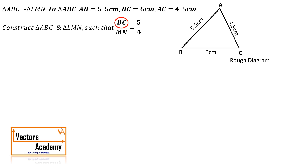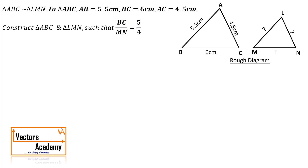5 is greater than 4. 5 corresponds to side BC, and BC belongs to triangle ABC. Hence triangle ABC is the larger triangle and LMN is the smaller triangle, so the triangle which we require will be a smaller one. But we still don't know the sides of LMN — for that we require some calculations. Both triangles are similar and the ratio of the sides is always the same, given as 5 by 4.